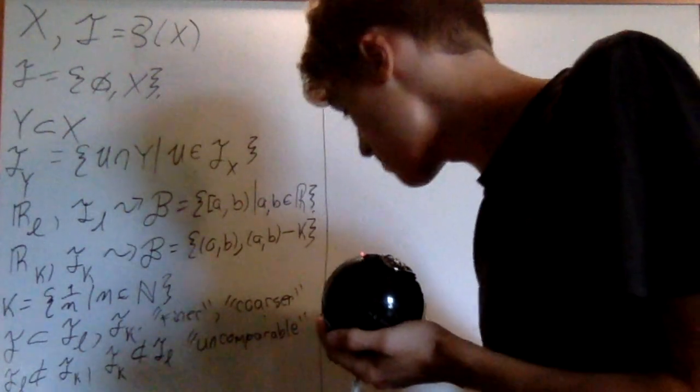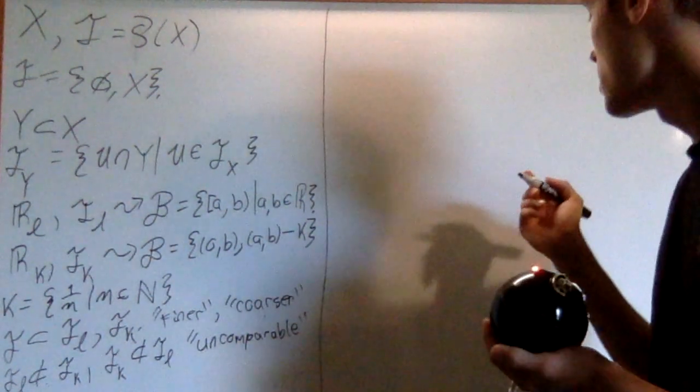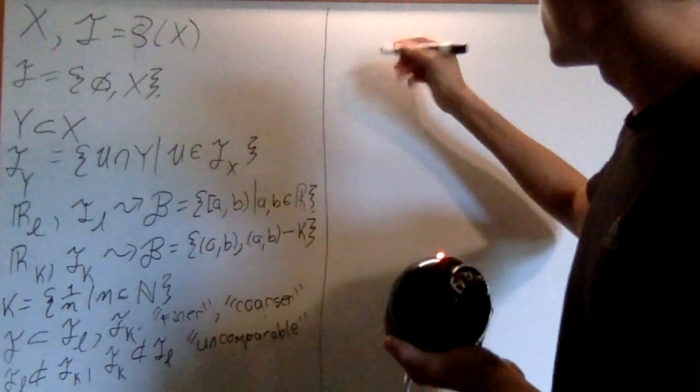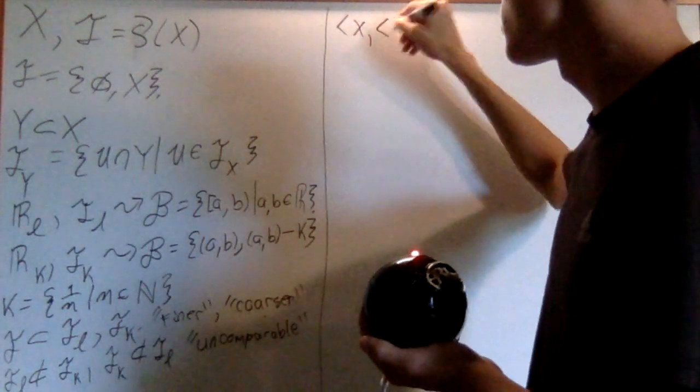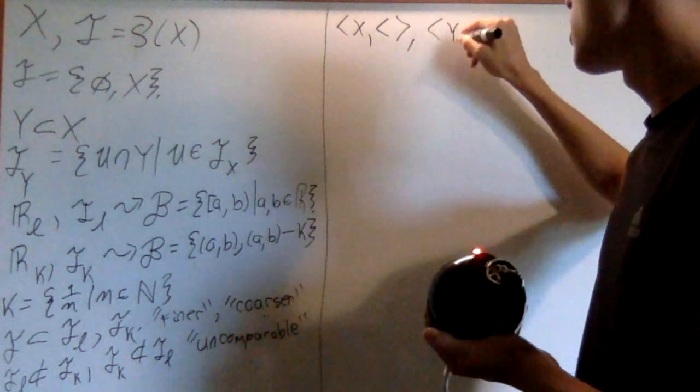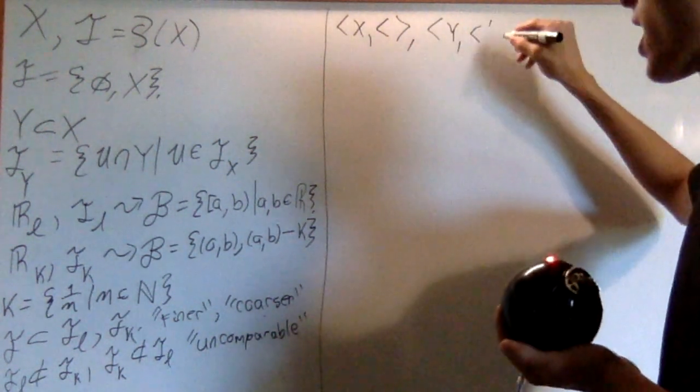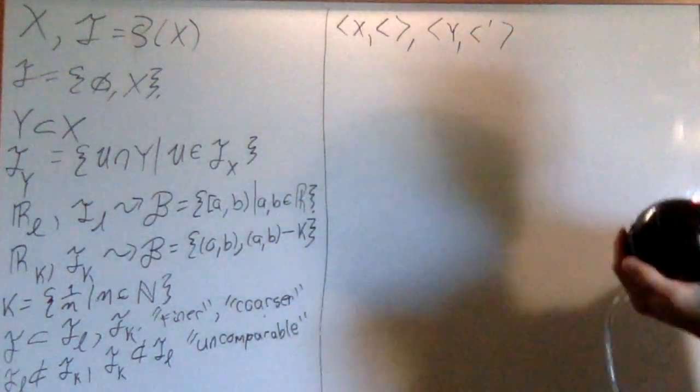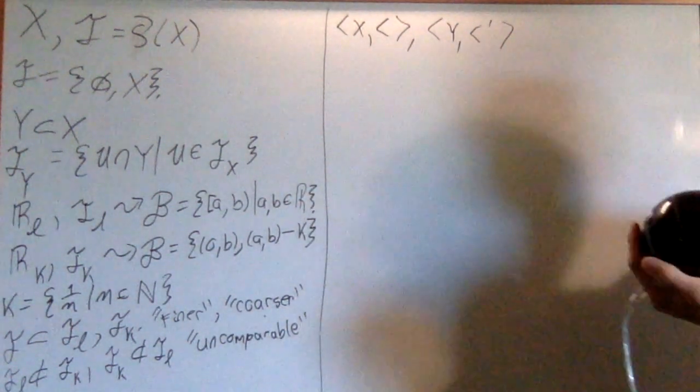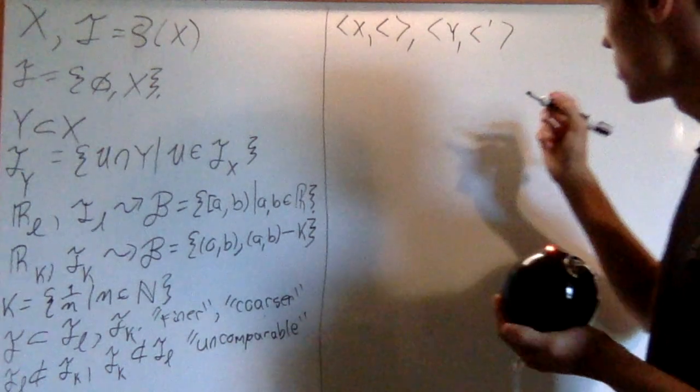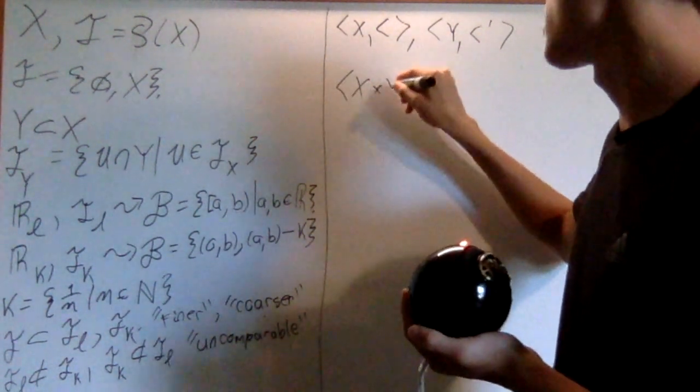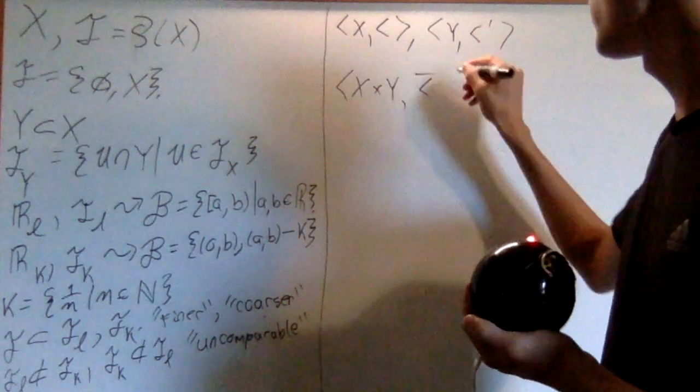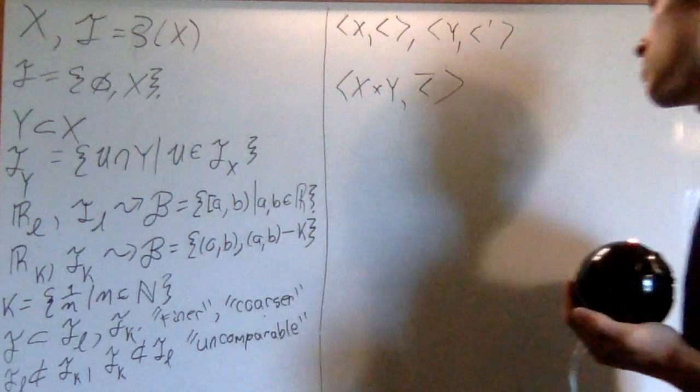Now I'm going to extend on my order topology video now. If I have two order spaces, let's say X under less than and Y under less than prime. That's a weird notation, but I'm using it. Then we define a new order on X cross Y. I'll call it less than bar, but that's just completely arbitrary.